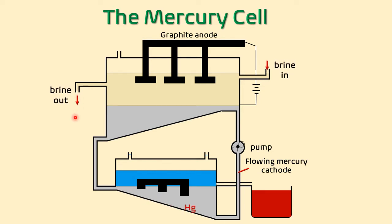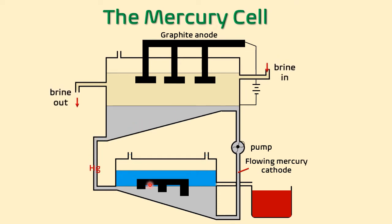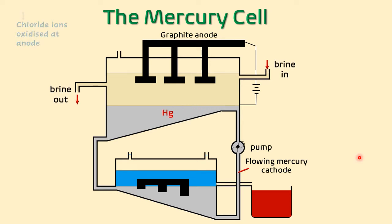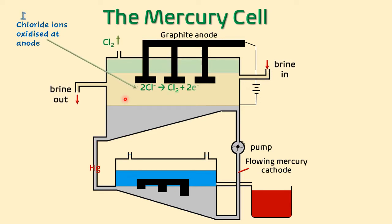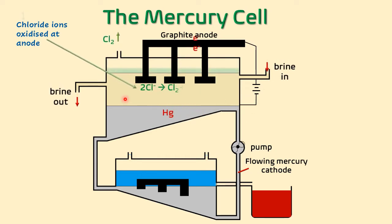We shall discuss why brine has to be kept flowing for this cell to work. The lower compartment has water, the reason for which we shall review shortly. At the anode, chloride ions are oxidized, producing chlorine gas and two electrons. Chlorine gas bubbles through the brine and is collected in the upper compartment for various uses. The two electrons move from the anode through the external circuit and are introduced into the mercury cathode.